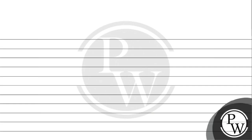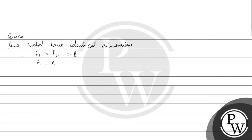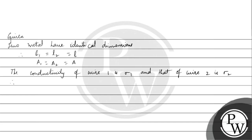They have said that two metal wires are of identical dimensions. So the length of the two wires is the same and their cross-sectional areas are also the same. The conductivity of wire 1 is σ1 and that of wire 2 is σ2. Since they are connected in series, the effective equivalent resistance is given by R1 plus R2.